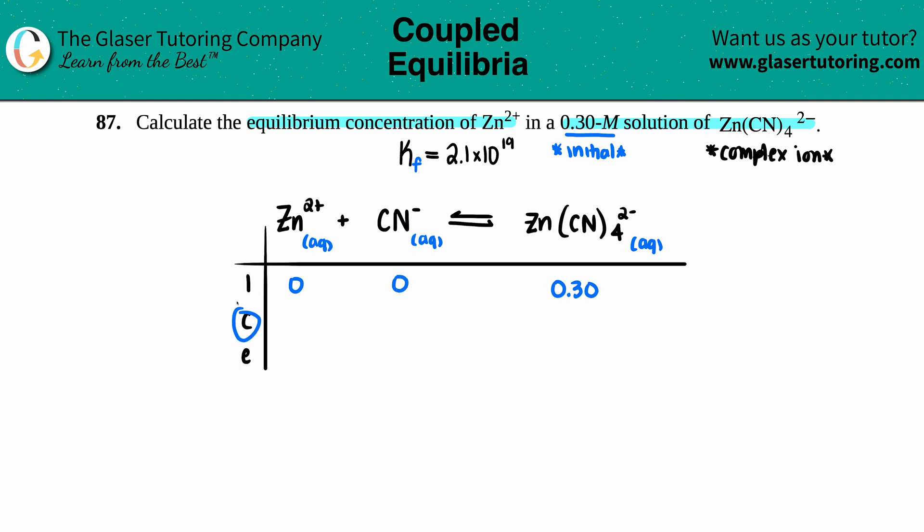C stands for change, so we're going to be plussing or minusing concentrations depending on what we're starting with. We have nothing starting, so you can only go up from there. The reactant side has to be plus and the product side has to be minus. We use our coefficients. Always make sure this is balanced - there's four CNs, so we need to put a 4 in front here.